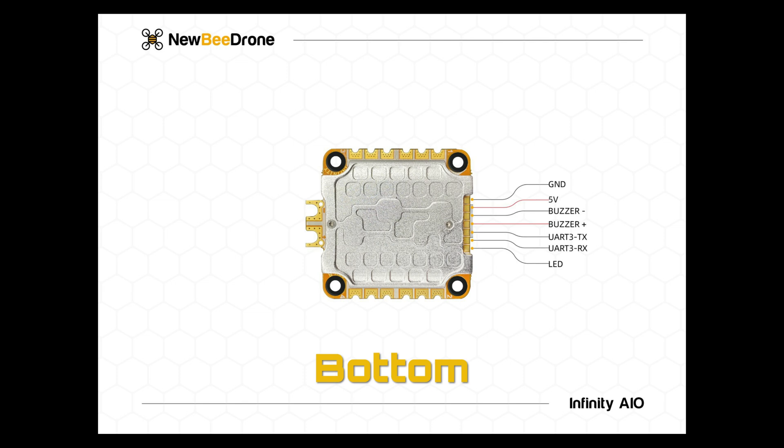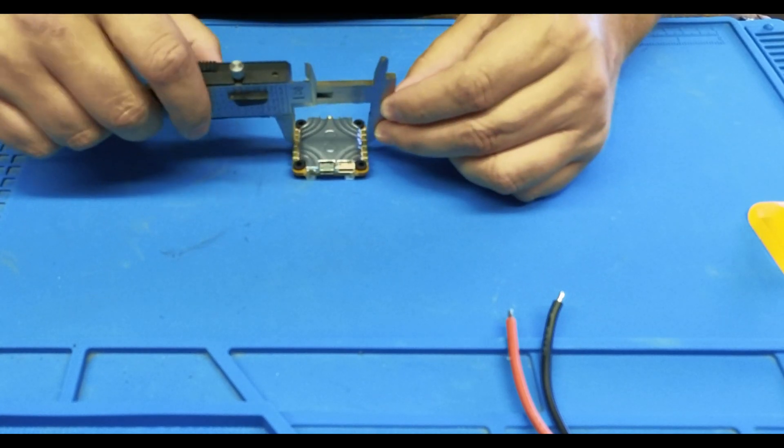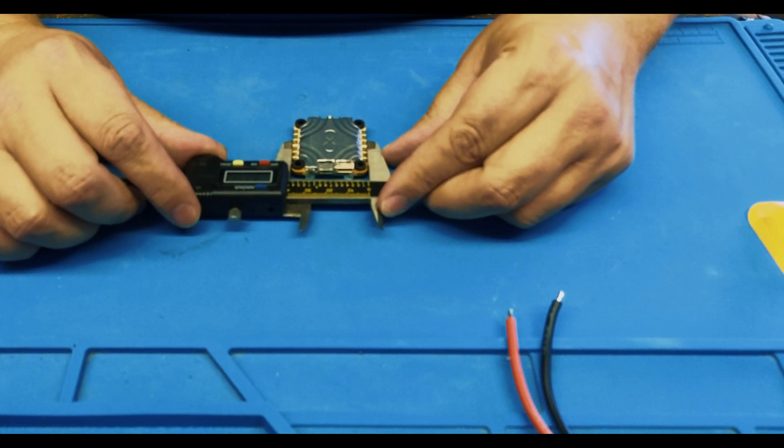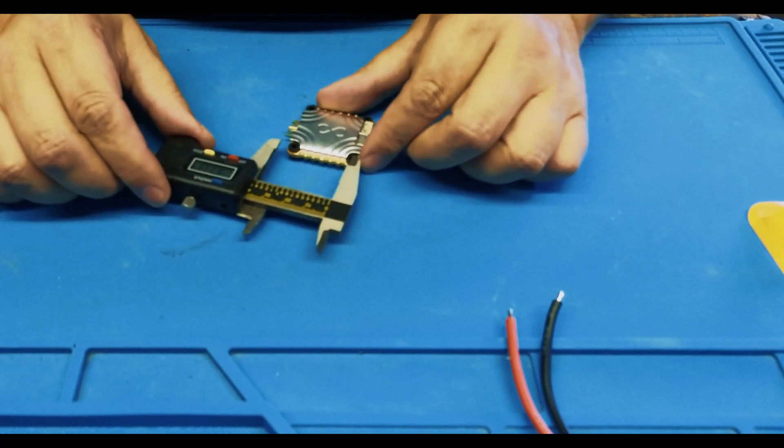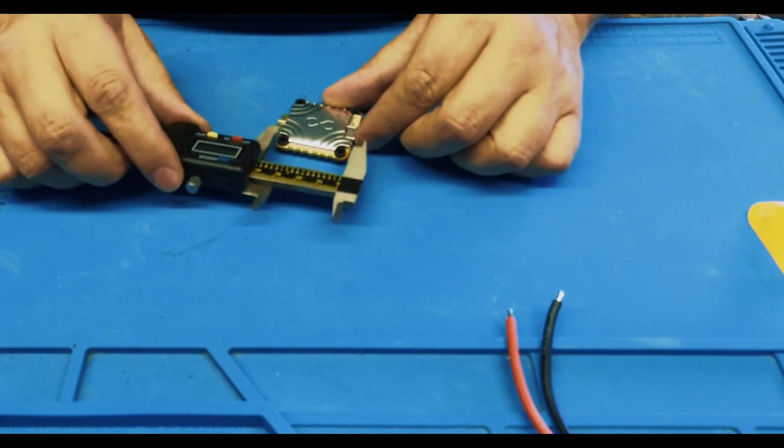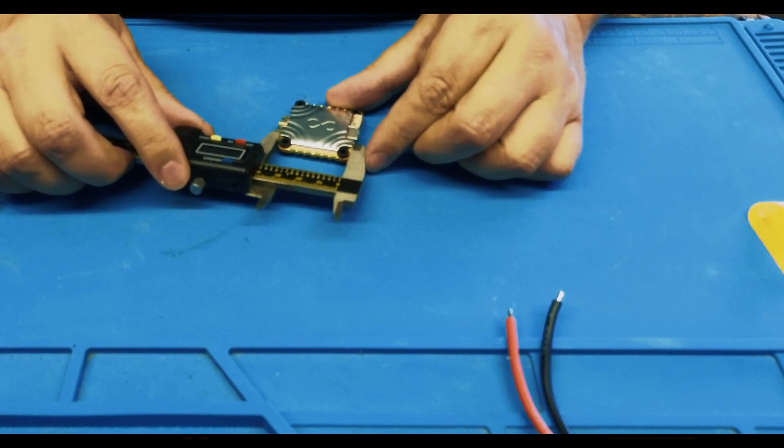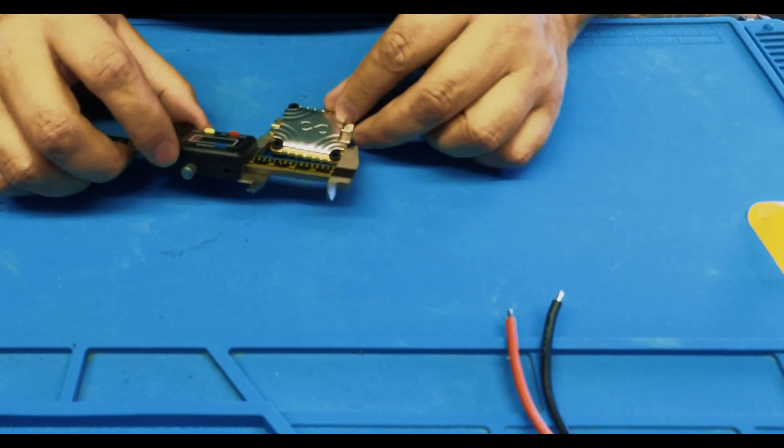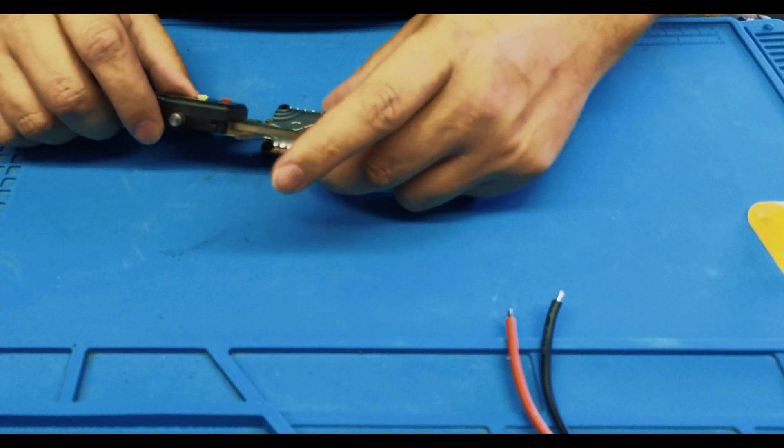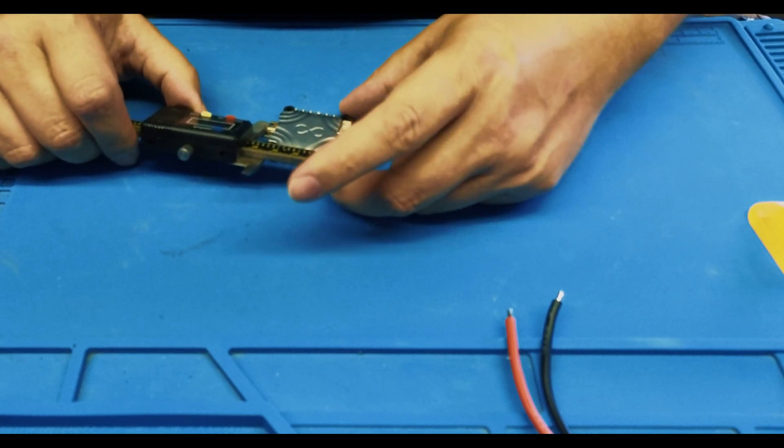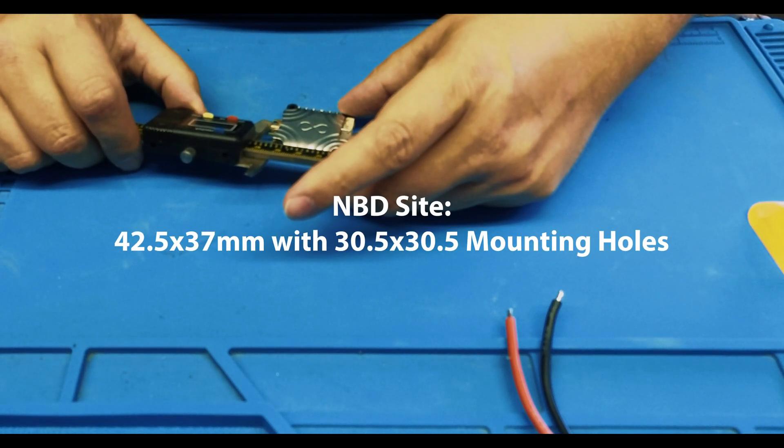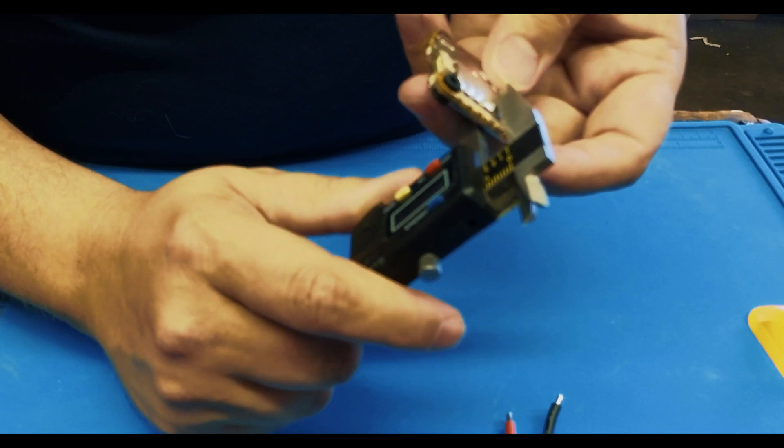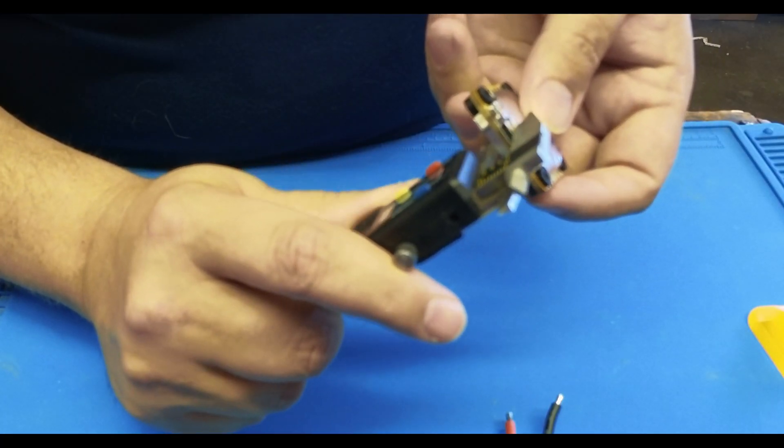Here is the bottom view to kind of help you out as far as where everything is at. For the dimensions, on the width you're looking at around 37 millimeters. The length is approximately 38 millimeters not including the XT60 connections. If you include the XT60 connections, you're looking at about 42.4 millimeters.